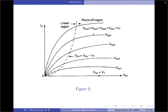At a still higher value of drain-to-source voltage — that is when VDS is greater than VGS minus VT — the drain current versus VDS characteristics deviates from the linear relationship. For a given value of VGS, the drain current tends to saturate with increase in VDS, and transistors are used in this region for voltage amplification. Pinch-off occurs exactly at VDS equal to VGS minus VT, so this line on the graph is the pinch-off line.